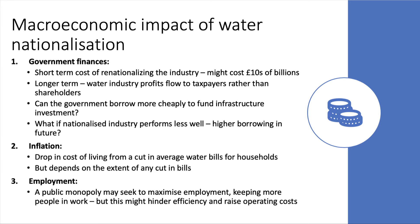Inflation could be a macro aspect — if water bills come down, that obviously reduces the cost of living, producing a one-off fall in inflation. Presumably water bills might rise by a modest amount year on year, keeping the inflation rate low, but that depends on the extent of any cut in bills and the efficiency of the system. What about jobs? A public sector monopoly compared to a privately owned profit-seeking business may seek to maximise employment and keep more people in the industry for social or political reasons, but this might hinder economic efficiency and increase operating costs and the burden on the taxpayer.